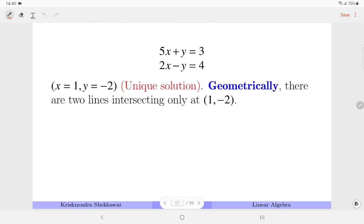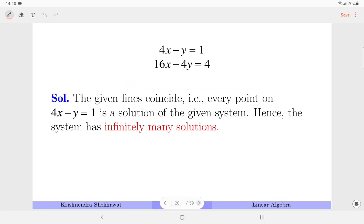So we have seen three cases: unique solution, no solution, and infinitely many solutions. In case of infinitely many solutions, it is also interesting to write the solution set. From the first equation I can compute y equals 4x minus 1. So the solution set is all those values of x and y for which 4x minus y equals 1. This is equivalent to (x, 4x - 1) where x belongs to R. It means that you choose any value of x and that gives you a solution to the system. That's why there are infinitely many solutions.